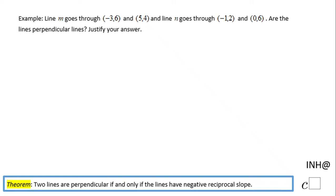Welcome or welcome back to I Need Help at C Square. In this example we have two lines, line M that goes through these two points and line N that goes through these two points. We need to find out if these two lines are perpendicular. Notice here I have a theorem that says two lines are perpendicular if and only if the lines have negative reciprocal slope. So what we need to do is find the slope of each line.